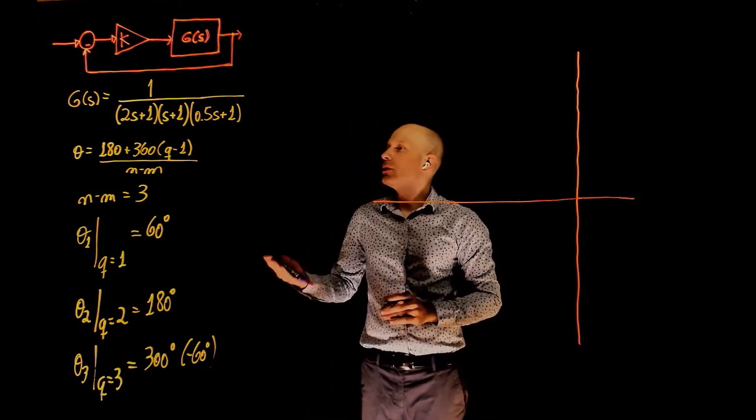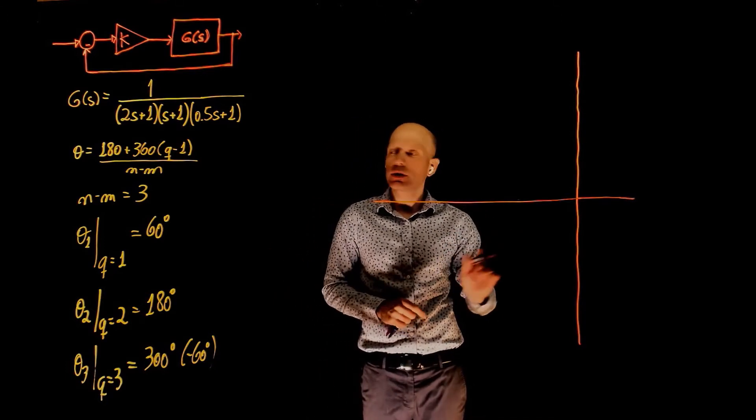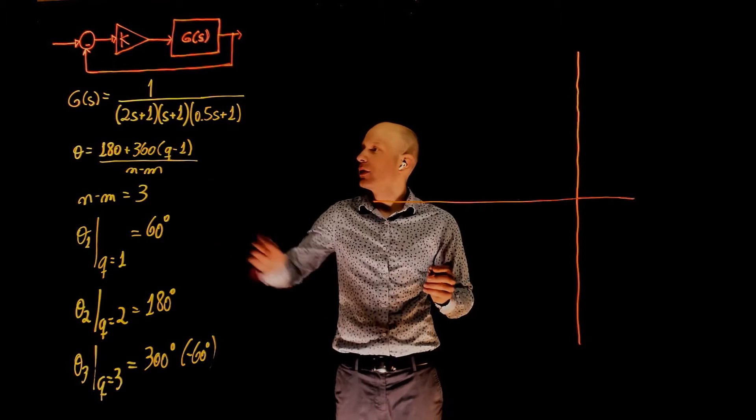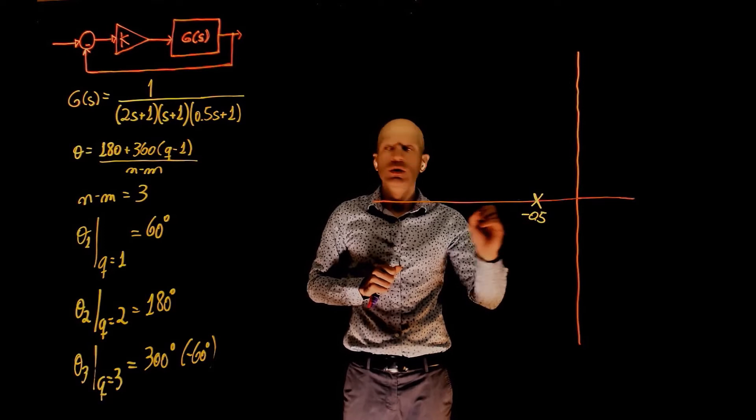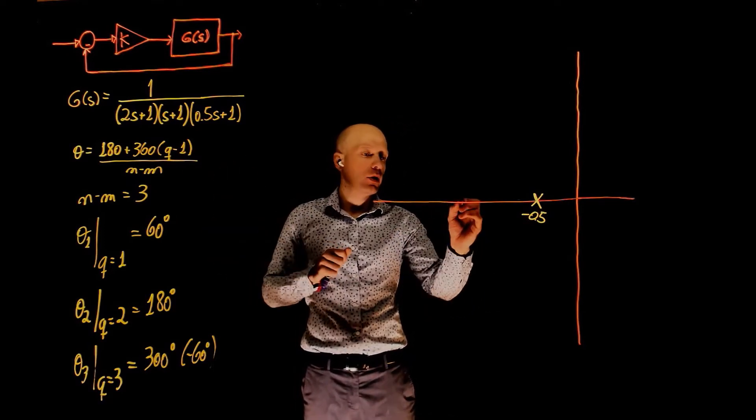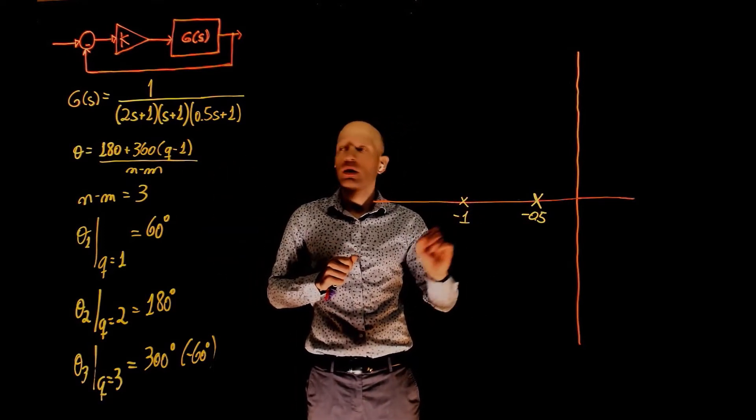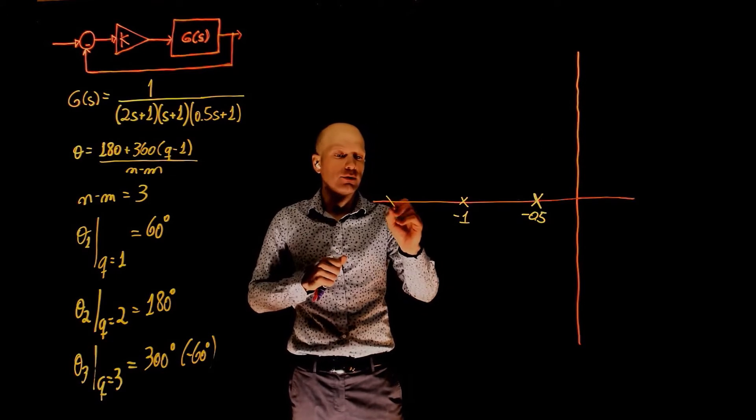We can now place all the poles and zeros on the S-plane. We have a pole at negative 0.5, a pole at negative 1, and a pole at negative 2.